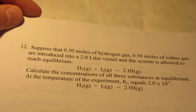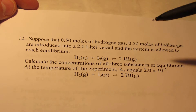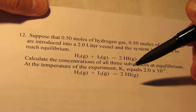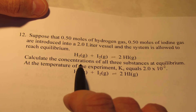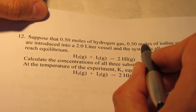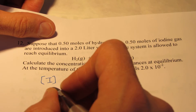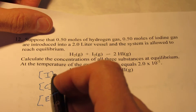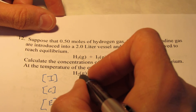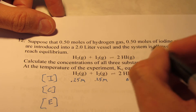One more question — these are what we call ICE problems, and this would be very similar to one you might see on your exam. Here's my reaction. I want to find the equilibrium concentration of everything once equilibrium has been established. I give you the number of moles of reactant, the volume of the container, and the equilibrium constant. My initial concentration is not 0.5 — it's 0.5 divided by 2 liters, so 0.25 molar. My iodine is the same thing, 0.25 molar, and I haven't made any product yet.